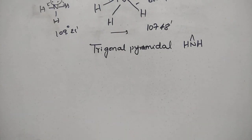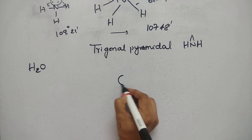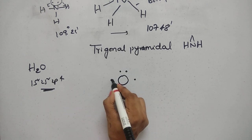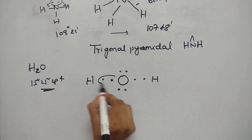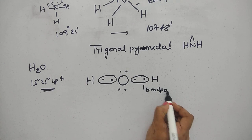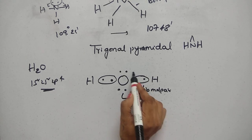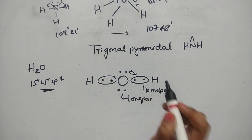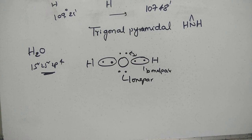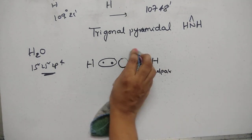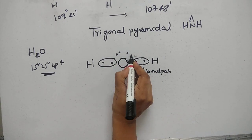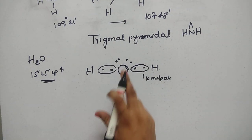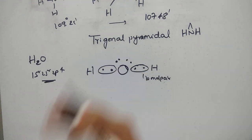In the water molecule, H2O, oxygen has 6 valence electrons — forming 2 bond pairs with 2 hydrogen atoms and leaving 2 lone pairs. The lone pairs circulate around the central atom like a cloud in 3D, not just above or in front. This causes repulsion between the two lone pairs and the two bond pairs.